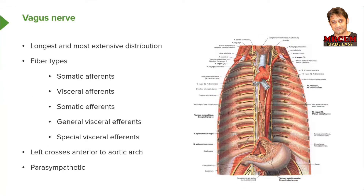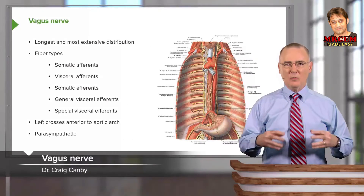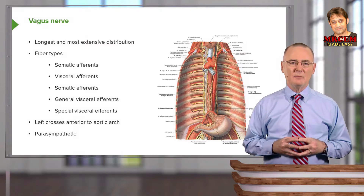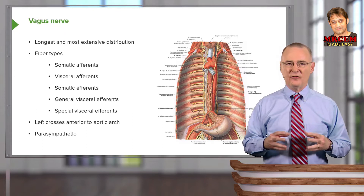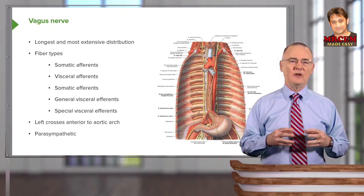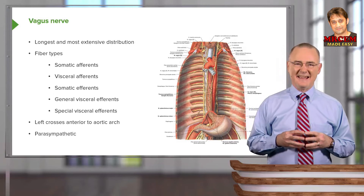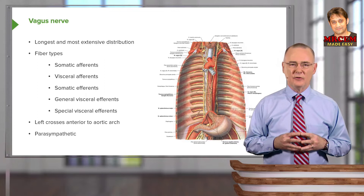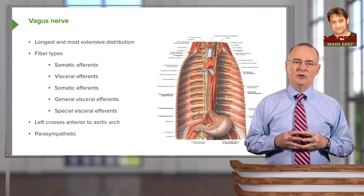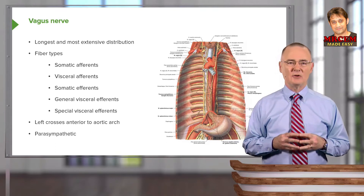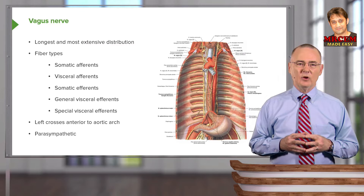The vagus nerve is a cranial nerve — the longest of the cranial nerves with the most extensive distribution. 'Vagus' is derived from a word meaning wandering, and it does wander throughout almost the entire body. It conveys somatic afferents, visceral afferents, somatic efferents, and two types of visceral efferent fibers: general visceral efferents and special visceral efferents.